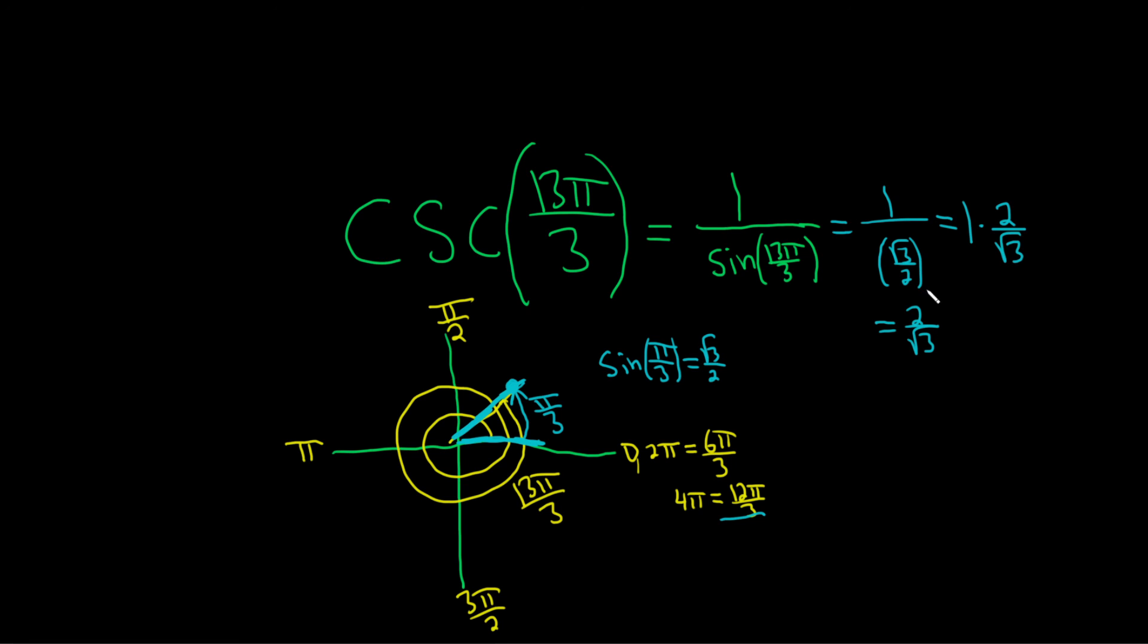In order to rationalize, we'll multiply by 1 in a clever way, square root of 3 over square root of 3. So this is equal to 2 square root of 3, and then square root of 3 times square root of 3 is 3. And that would be the final answer.